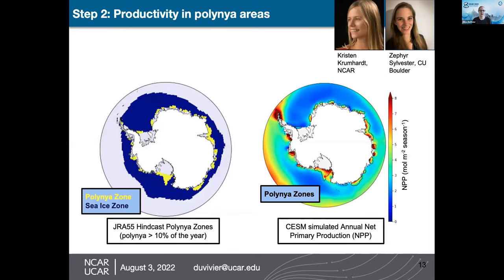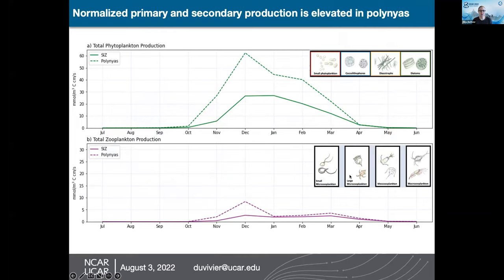The second step is understanding how changes in ice affect the Earth system. Work by Kristen Krumhardt and Zephyr Sylvester used the algorithm to identify regions that are typically polynia zones — areas where a polynia is identified more than 10% of the time — and sea ice zones. In the model, net primary productivity, or NPP, tends to be elevated in polynia regions, as shown by red hotspot colors aligning with polynia zone outlines.